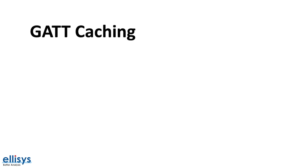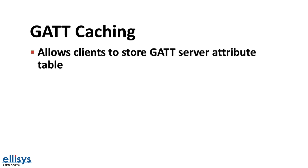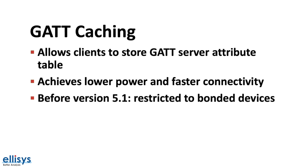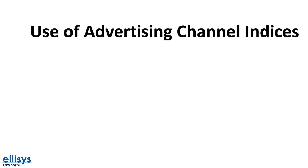Another feature introduced in version 5.1 is the ability to store and cache the attribute table of a GATT server. This allows for lower power consumption since the radio is on for shorter periods of time, and for faster connectivity as well. Before 5.1, this was restricted to bonded devices, but now in 5.1 and later it is allowed for unbonded devices as well.